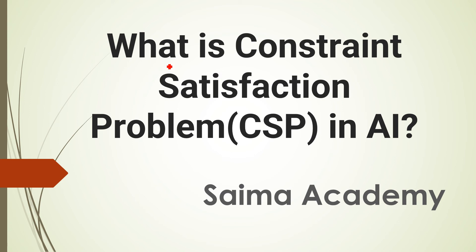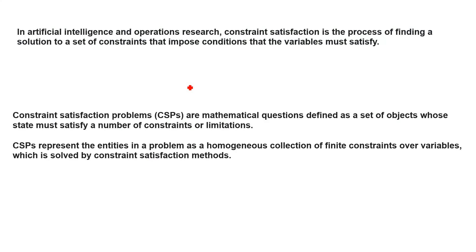In this lesson, we will discuss what is a Constraint Satisfaction Problem, called CSP in Artificial Intelligence. I have written a definition for you. In Artificial Intelligence and Operations Research, constraint satisfaction is the process of finding a solution to a set of constraints that impose conditions — limitations or restrictions — that the variable must satisfy. When you read this definition alone, it will not be clear.